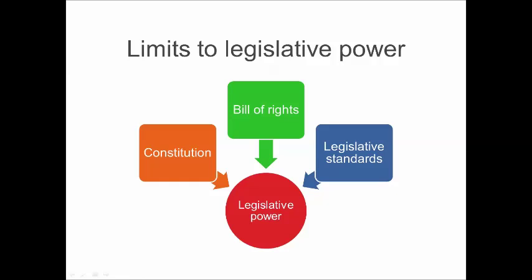While states are subject to the Australian Constitution, the starting point for state governance is that provided legislation is done for the good governance of the people of that state, its powers are unfettered. In some jurisdictions - the ACT and Victoria - there is a Bill of Rights and legislation must be consistent with that Bill of Rights. This Bill of Rights structure is not a feature of the federal government and it's not a feature in Queensland.